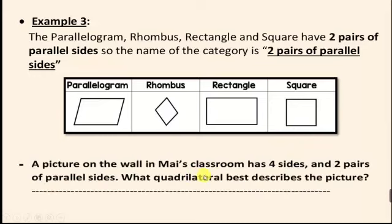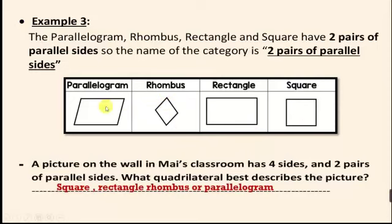Let's see an exercise. A picture on the wall in my classroom has four sides and two pairs of parallel sides. What quadrilateral best describes the picture? It can be any one of them — a parallelogram, rhombus, rectangle, or square — because they all have four sides and two pairs of parallel sides.